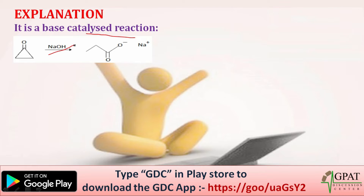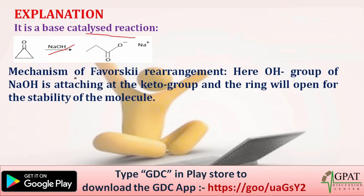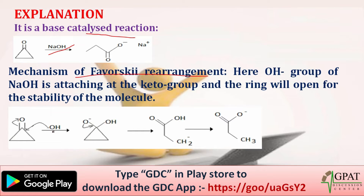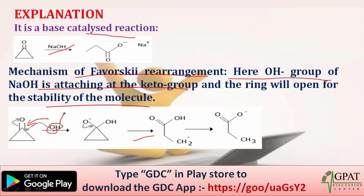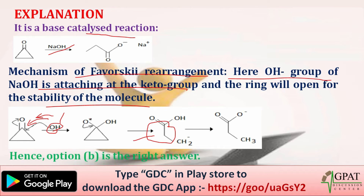The mechanism of the Favorskii rearrangement: the OH group of NaOH attaches to the keto group, and then the ring opens for the stability of the molecule. This confirms it is a base-catalyzed reaction. The correct answer is option B — basic medium.